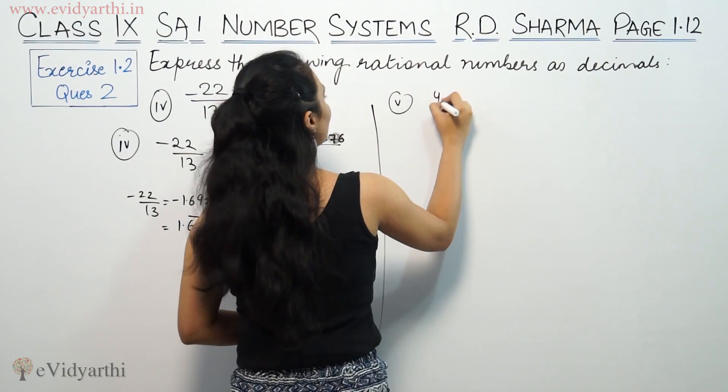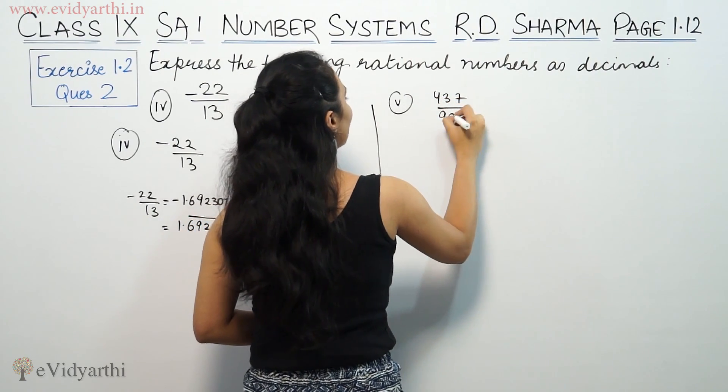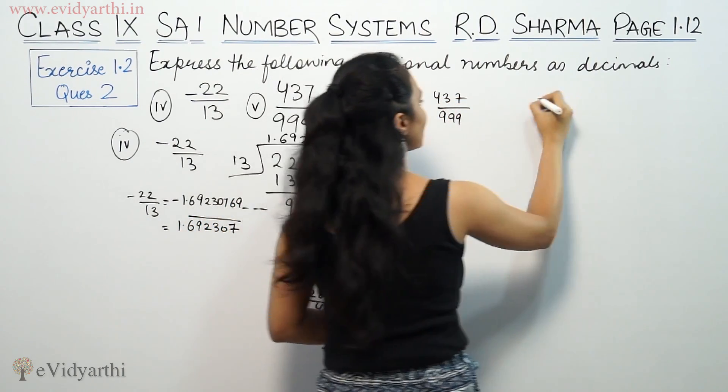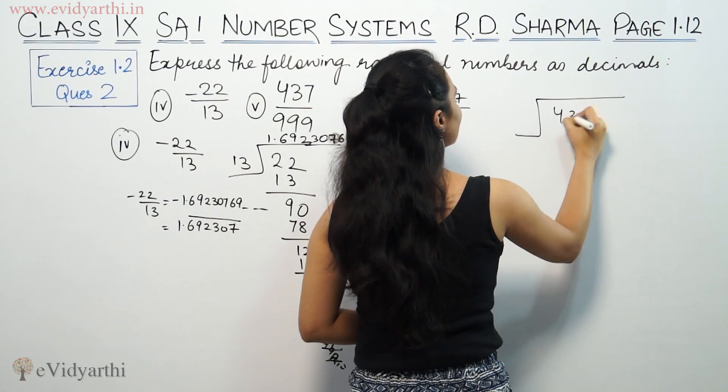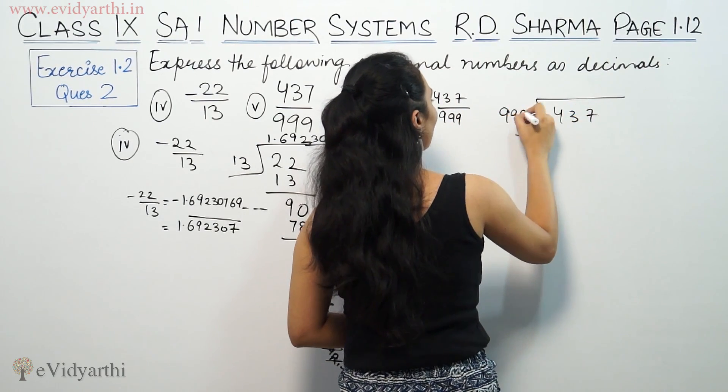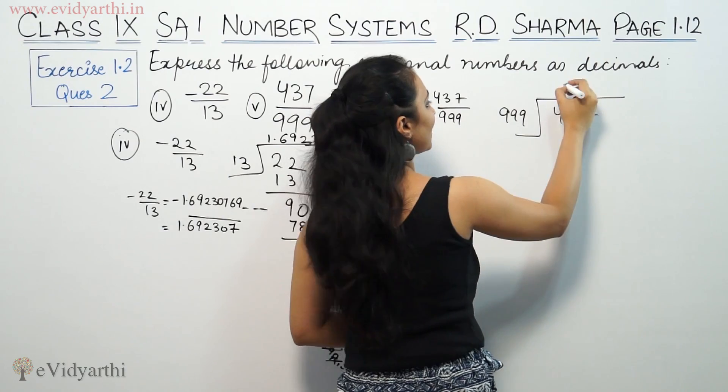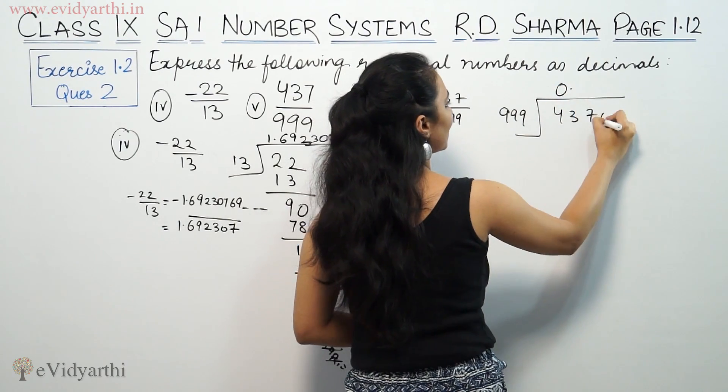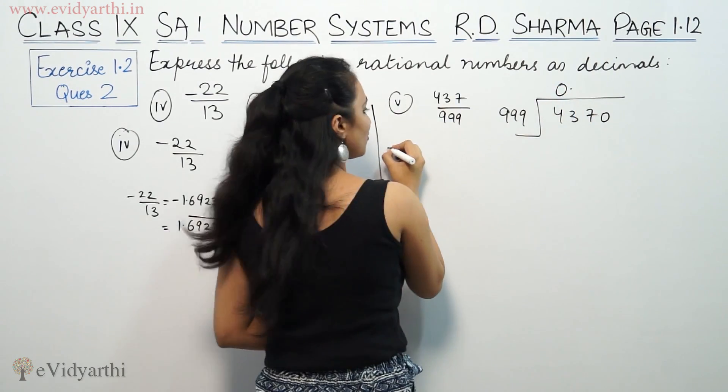Similarly, for part 5, we have 437 by 999. So 999 goes into 437 zero times. We put zero, then a decimal point, then another zero.